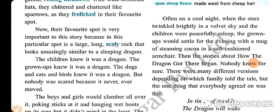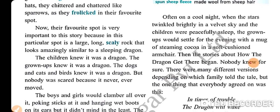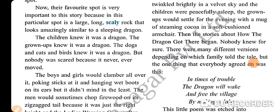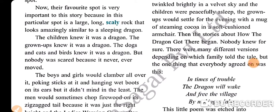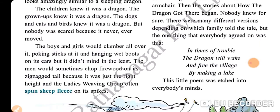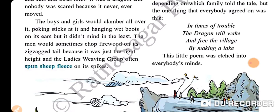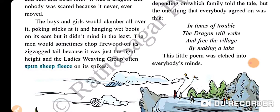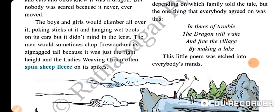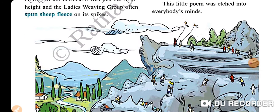Often on a cool night when the stars twinkled brightly in a wide sky and the children were peacefully asleep, the grown-ups would settle for the evening with a mug of steaming cocoa in a soft cushioned armchair. Then the stories about how the dragon got there began — nobody knew for sure. There were many different versions depending on which family told the tale, but the one thing that everybody agreed on was this: 'In times of trouble the dragon will wake and free the village by making a lake.' This little poem was etched into everybody's minds.